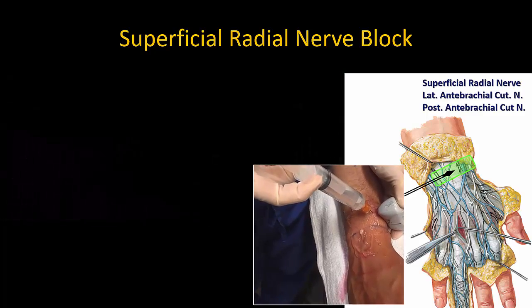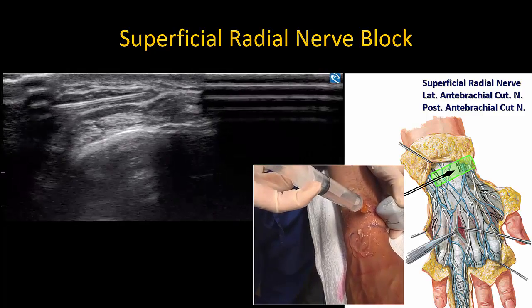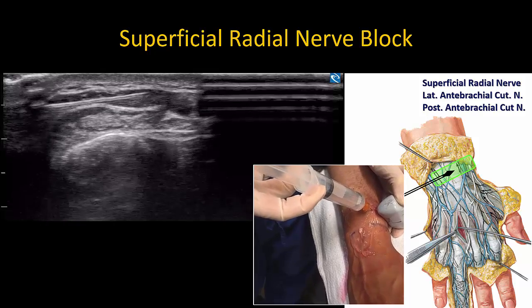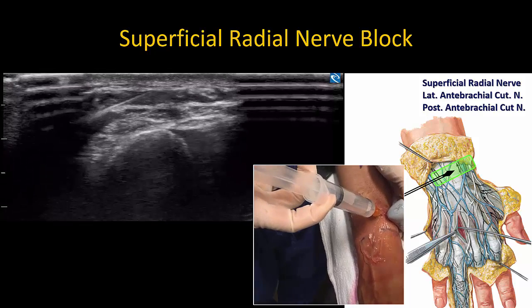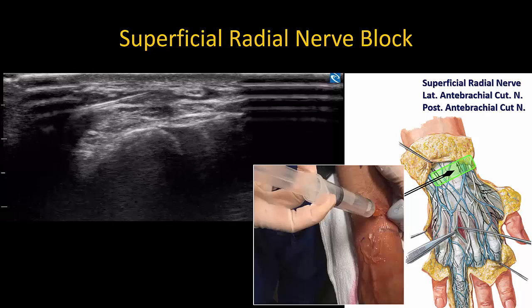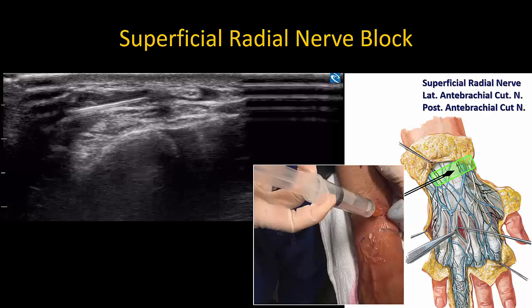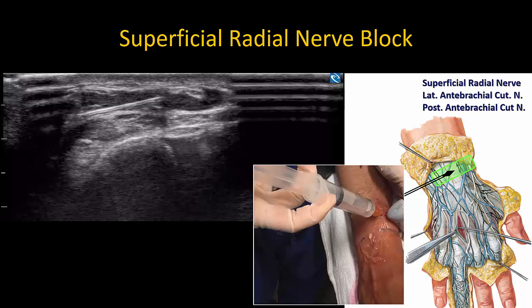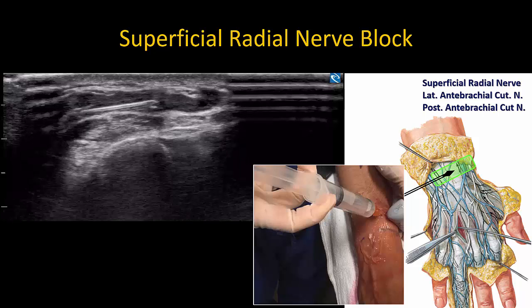The nerves often become visible as local anesthetic spreads around them. The infiltration technique has the added advantage of anesthetizing the terminal branches of the lateral antebrachial cutaneous nerve, which often contributes to innervation of the dorsal first web space and base of thumb, as well as terminal branches of the posterior antebrachial cutaneous nerve.